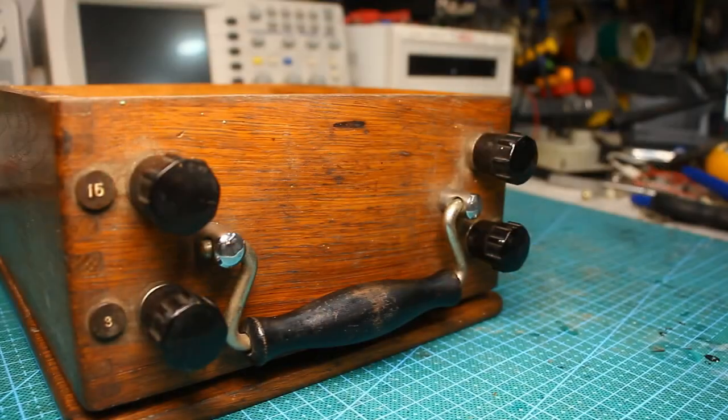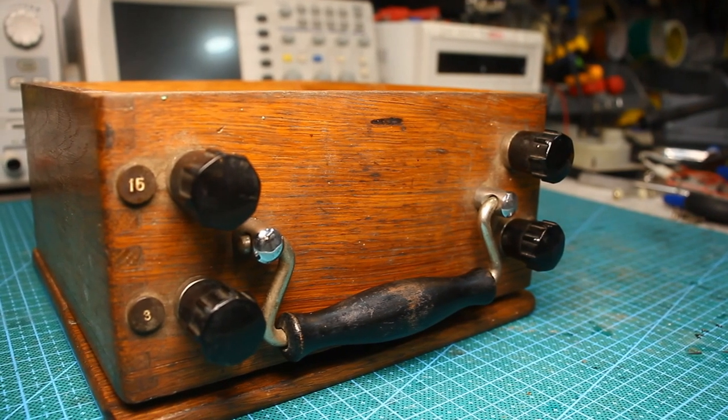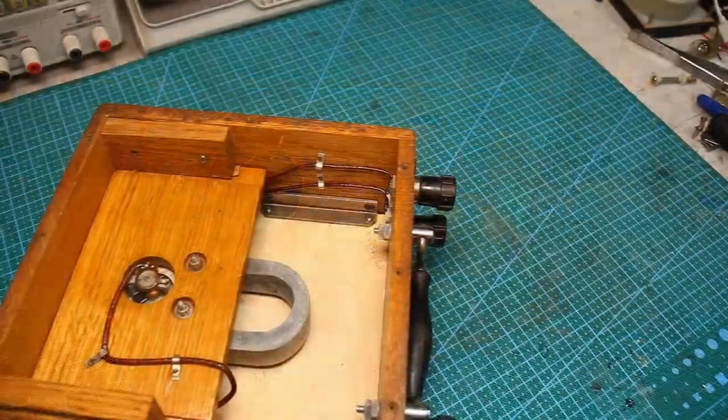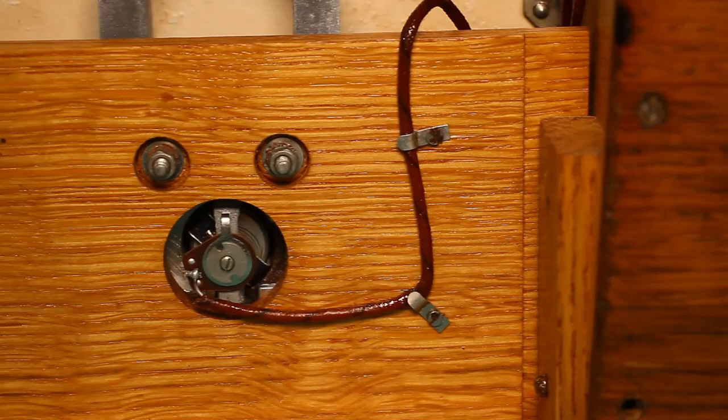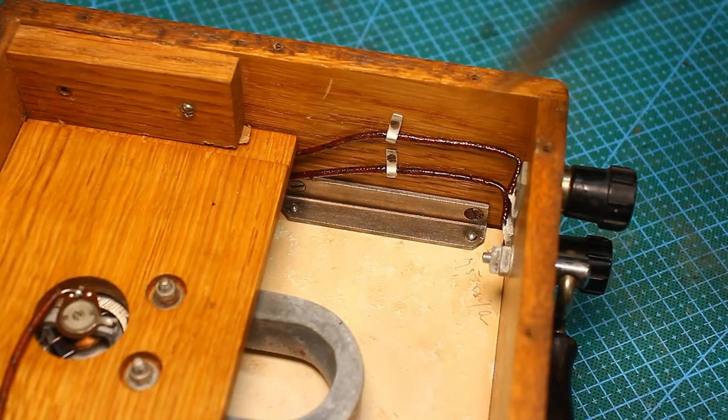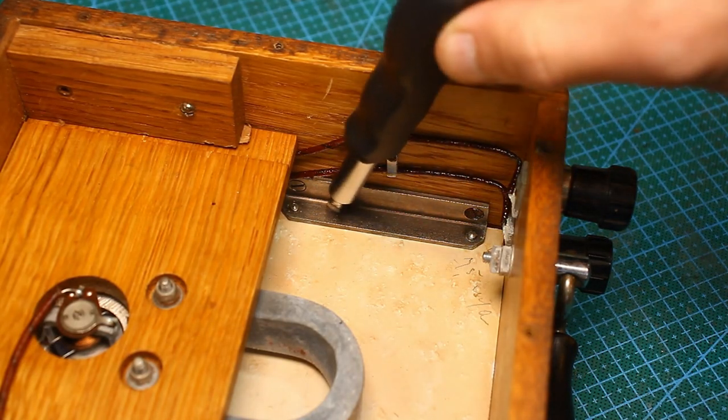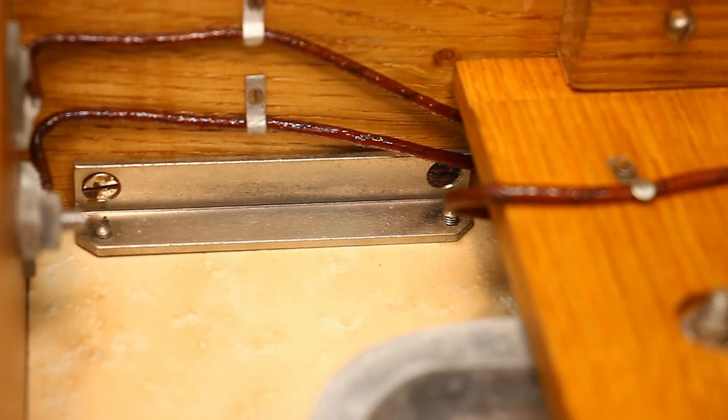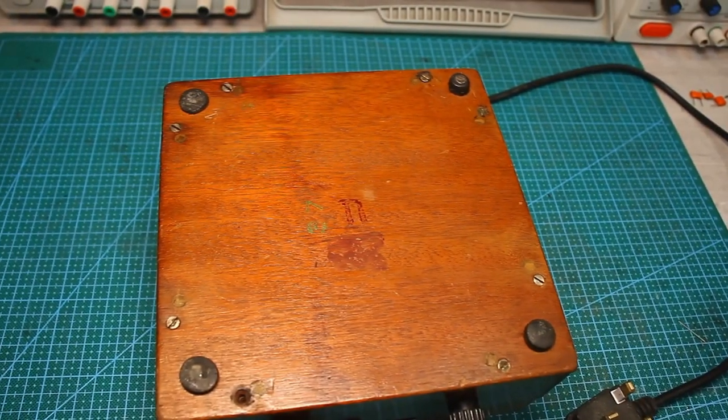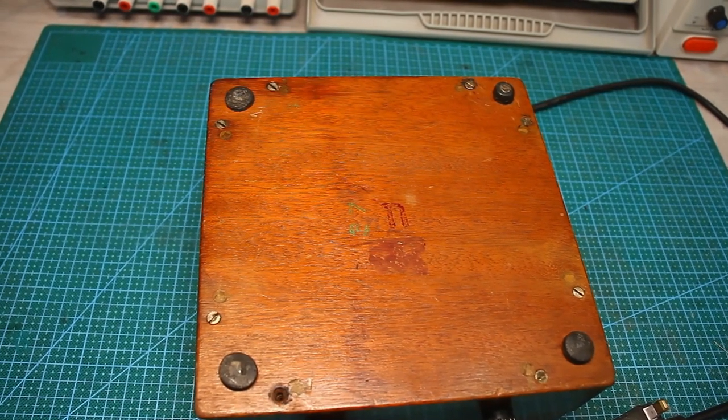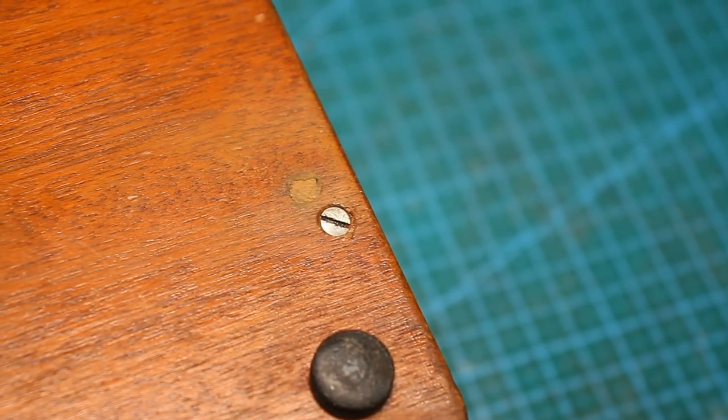unscrew the screws holding the scale and only after that you can remove the measuring head. You can say that I am doing something wrong and that it is enough to unscrew the screws on the wooden clamps. But in fact, nothing will come of it. The metal racks to which the scale is screwed will interfere and you cannot unscrew them from the back of the device. The Germans also used similar self-tapping screws but not in hard to reach places.